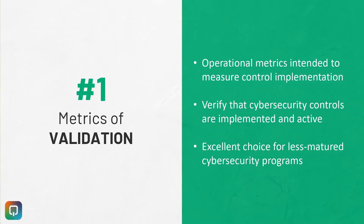The very first type of cybersecurity program metric is metrics of validation. These metrics are exactly like they sound — the idea is to verify, using objective measurement, that security controls are implemented and active. In most cases, you'll be validating the results of more subjective forms of measurements, such as a gap assessment.